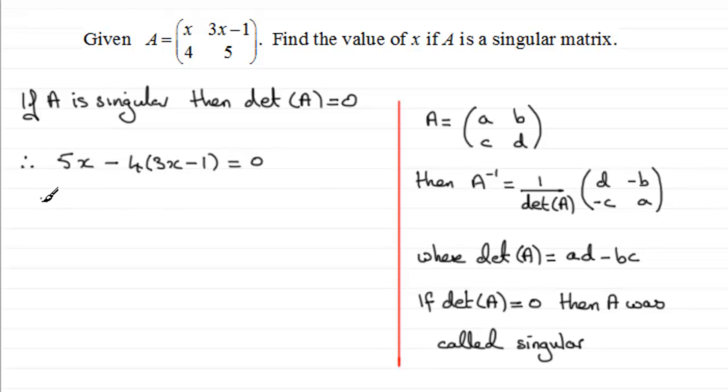And I just need to solve this for x. So therefore we've got 5x, and if we expand the bracket we get minus 12x plus 4, that must equal 0.